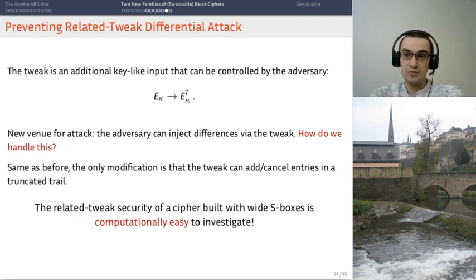Well, in our case, when you add a tweak, that's only two new inputs that you need to consider in every step, which is really not that much. So, you can use the same approach as before. You just make a small modification, which is that the tweak can cancel or maybe add new branches to your truncated trail.